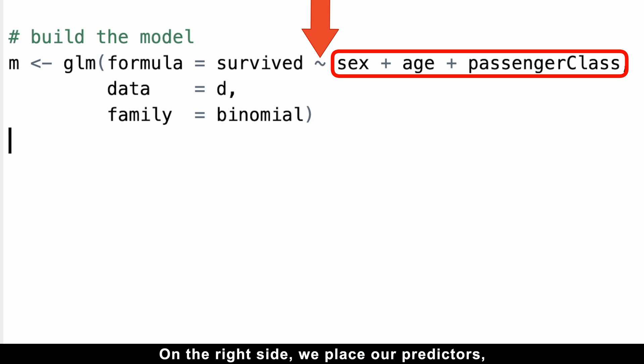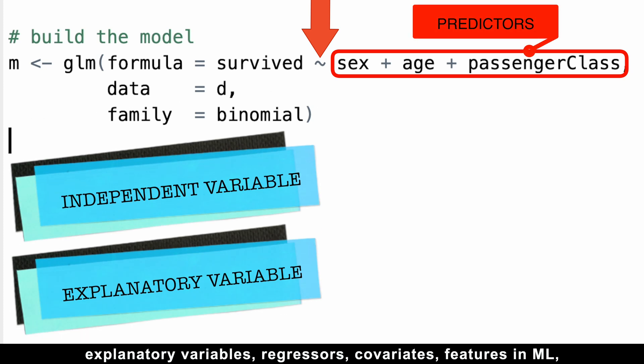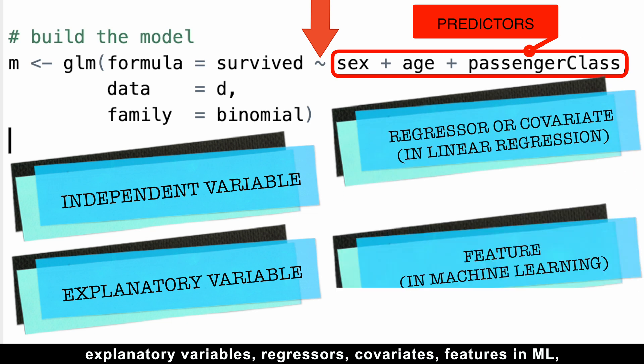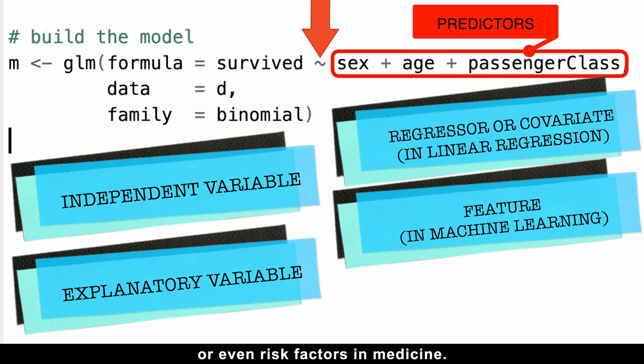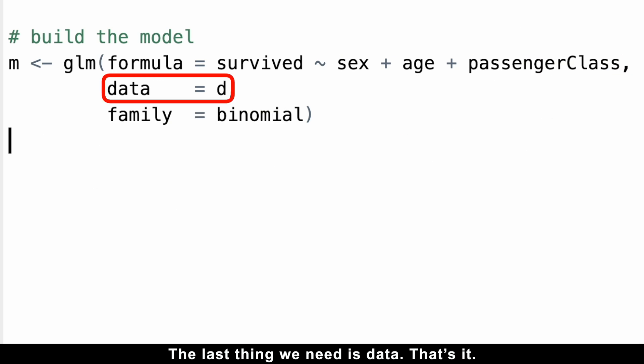On the right side of the tilde, we place our predictors, which can also be called independent variables, explanatory variables, regressors, covariates, features in machine learning, or even risk factors in medicine. The last thing we need is data, and that's it.